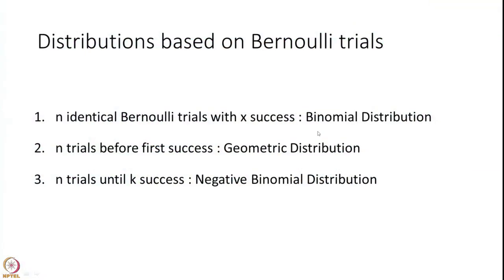There are several distributions which arise from Bernoulli trials. The first is the binomial distribution, where you throw n identical Bernoulli trials and count the probability of exactly x successes. Another is the geometric distribution, where you count the number of trials before you encounter the first success. Then there is the negative binomial distribution, where you run n Bernoulli trials until you get k successes.